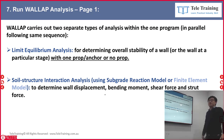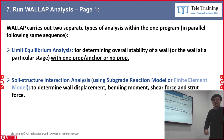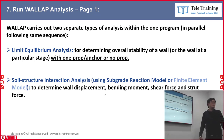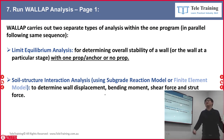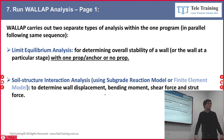When you click run, WALLOP will do two separate analyses behind the screen. One is called Limit Equilibrium Analysis, which looks at the stability of the wall. The second is a full soil-structure interaction analysis.